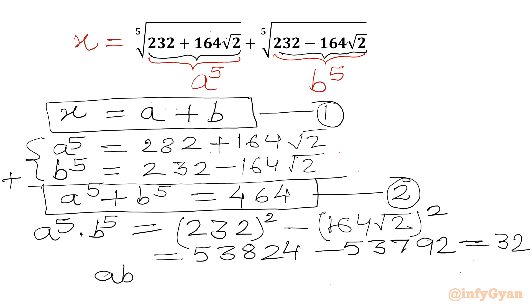So LHS will be AB whole power 5. And RHS 32 can be written as 2 power 5. Once we will take fifth root both sides, for real AB we will get AB equal to 2. And this equation we can consider equation number 3.